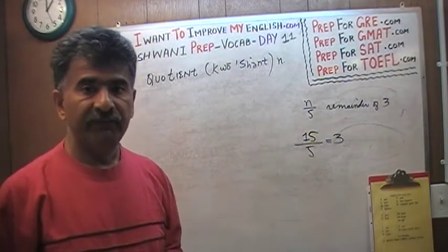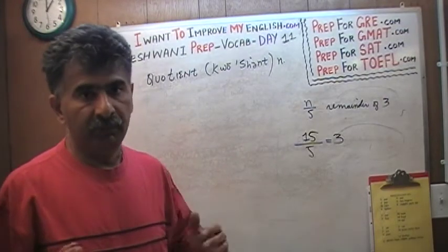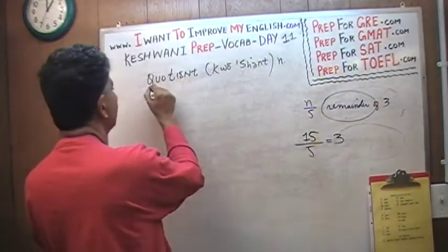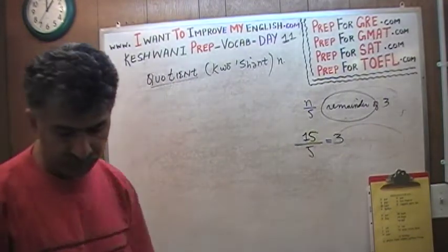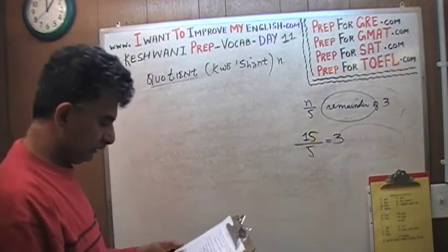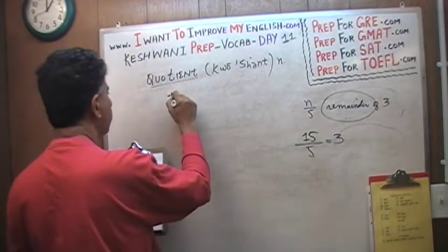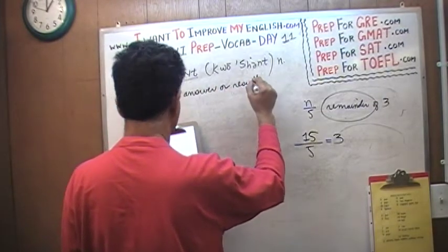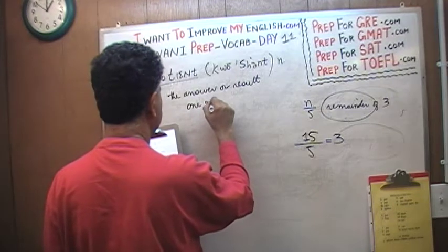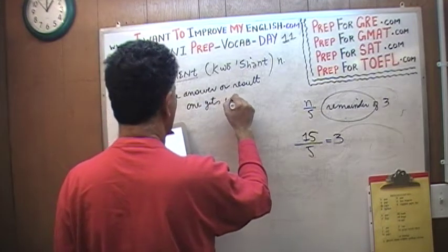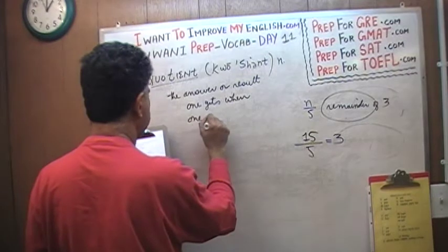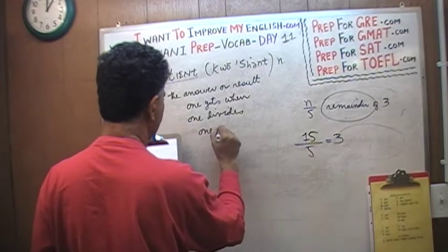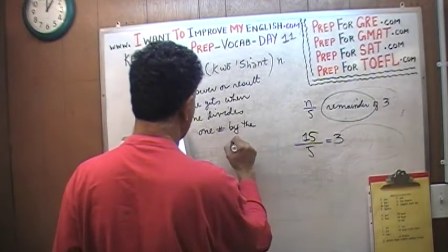They will tell you the answer is 15: 15 divided by 5 equals 3, and therefore they say the answer is 15. They are confusing the concept of remainder with quotient. So what is a quotient? Let's write down the definition. A quotient is the answer, or the result, one gets when one divides one number by the other.